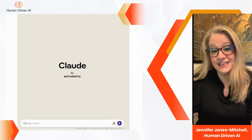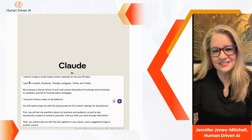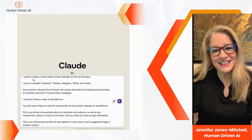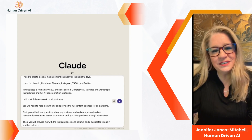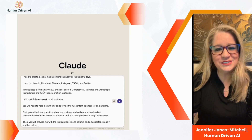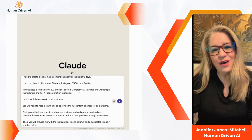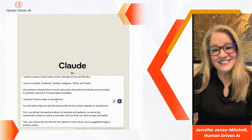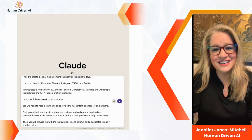First, tell the bot what you want it to do. Then tell it which platforms you want to post on. Explain your business, brand, or what it is you sell. Tell it how often you want to post, and tell the AI to create a content calendar for all of the platforms you identified.